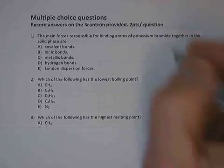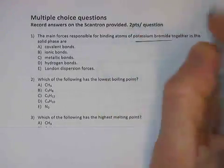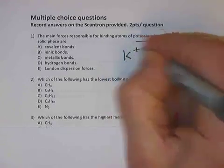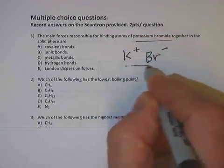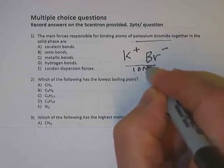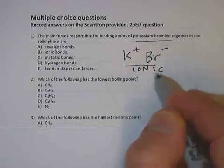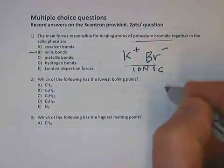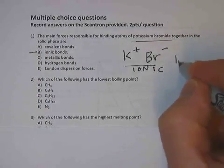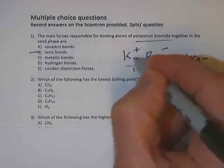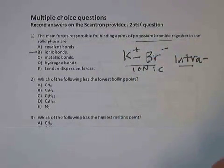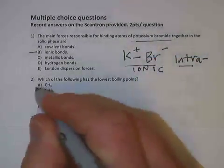Number one, the main force responsible for holding potassium bromide together. Potassium, remember, is a metal. Bromine is a non-metal, so potassium bromide would be an ionically bonded together thing, and so you'd say ionic bonds. Remember, ionic bonds are an intramolecular force between the ions, and then they'd form a crystal lattice that holds those together, and they're super strong.